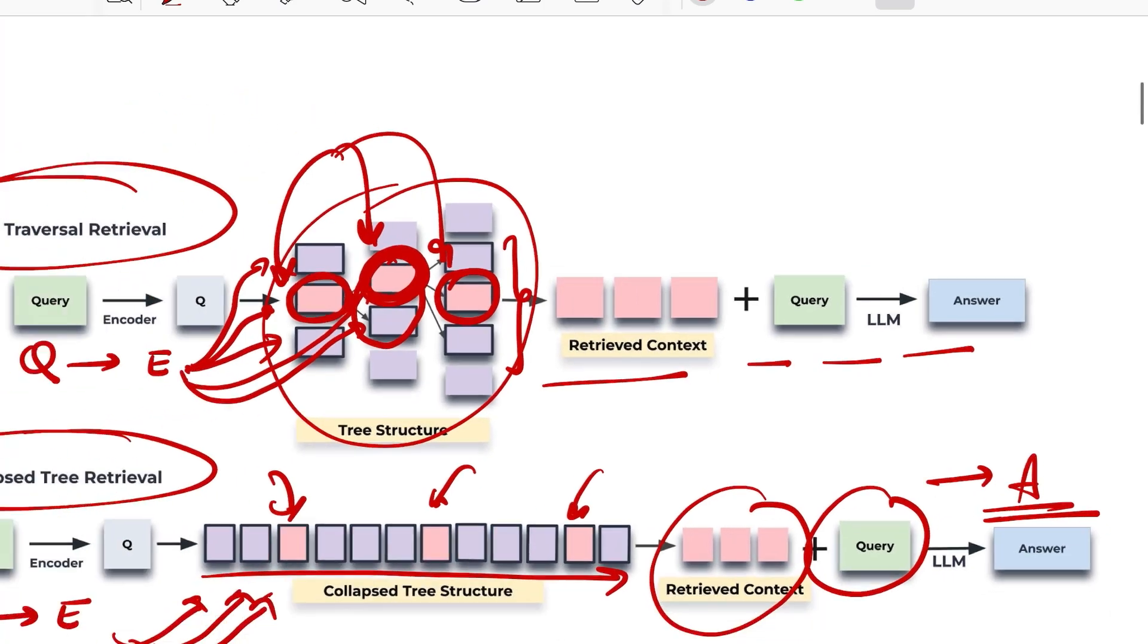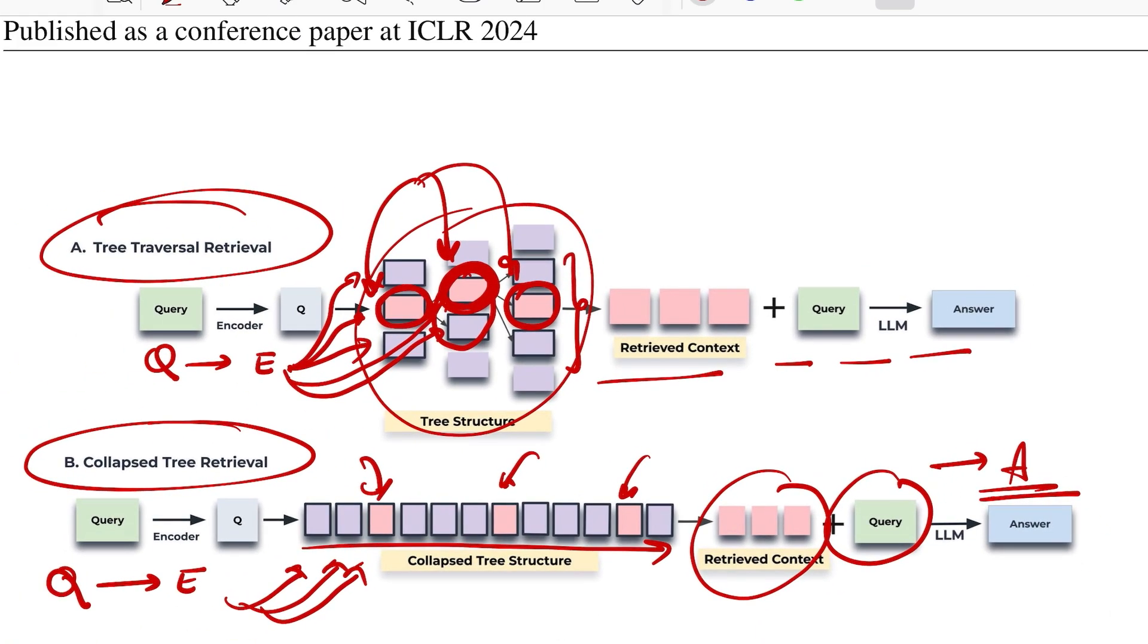And each of them are at different granularity, which means for getting the answer you have a lot more context at multiple granularity levels to get your answer. So these are the retrieved contexts, you add your query, pass it to the LLM and get your final answer. Now at every layer you can choose not just one but top-k nodes and so on and so forth. Your search space will increase as you go towards the bottom of the tree.